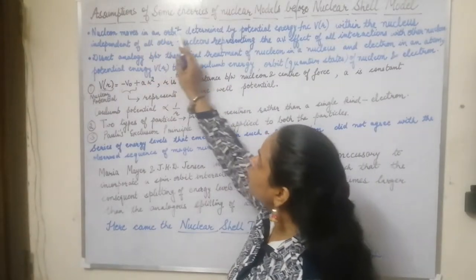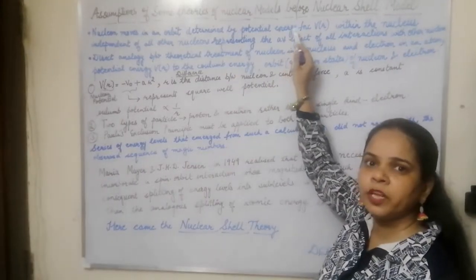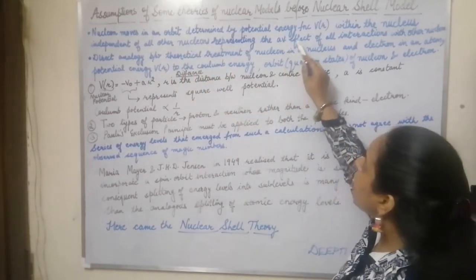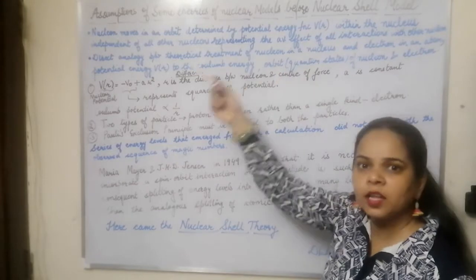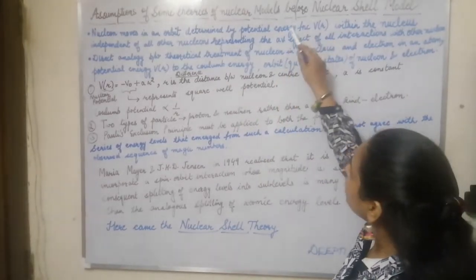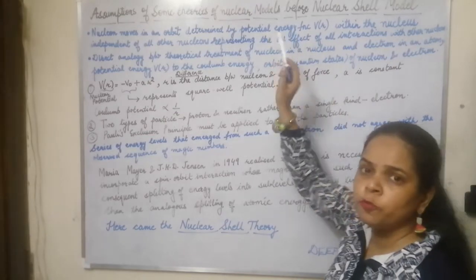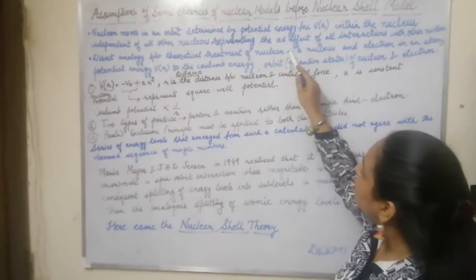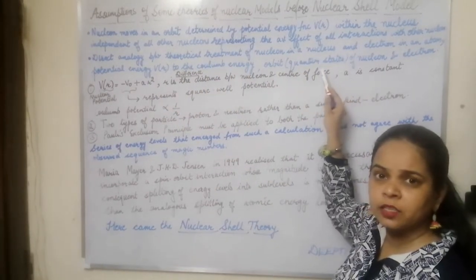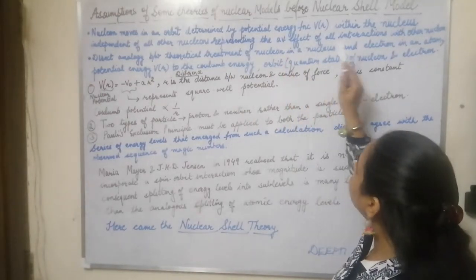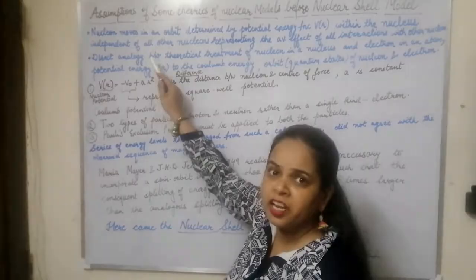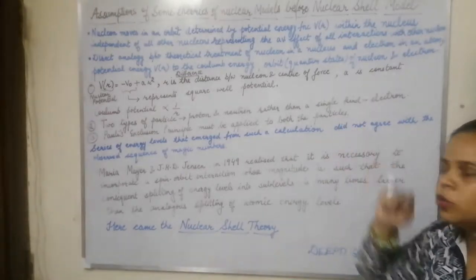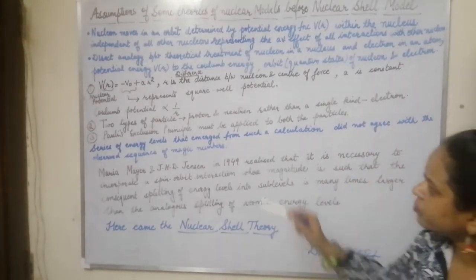The nucleons move in an orbit which is determined by the potential energy function V(r), and V(r) is the average effect of all the nucleons with all other nucleons. This V(r) potential determines the orbit. Just as the electron moves inside the atom, similarly the nucleons also move inside the nucleus, and the potential energy of the orbit is compared to the Coulombic energy that the electron experiences.